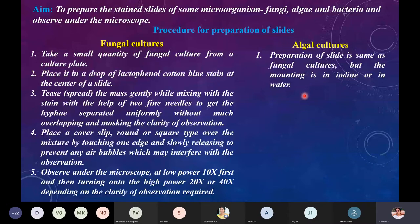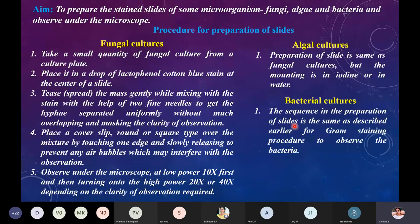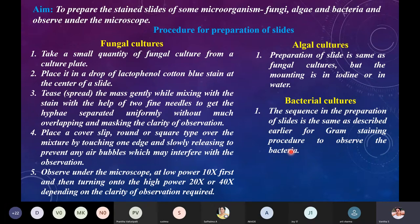For bacterial cultures, as we have seen, we follow the gram staining procedure using the primary stain and counter stain. For bacteria, first focus at 10x, locate the organism, then shift to 40x, and at 100x using oil immersion you identify whether the bacterial cultures are gram positive or gram negative. Once all slides are prepared using these procedures, you can identify the organisms by observing under the microscope.